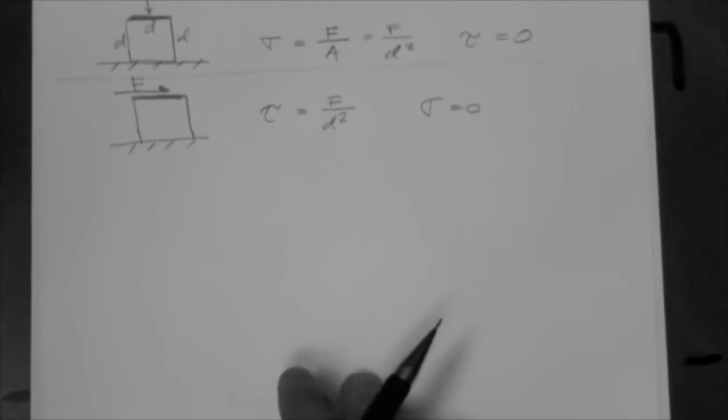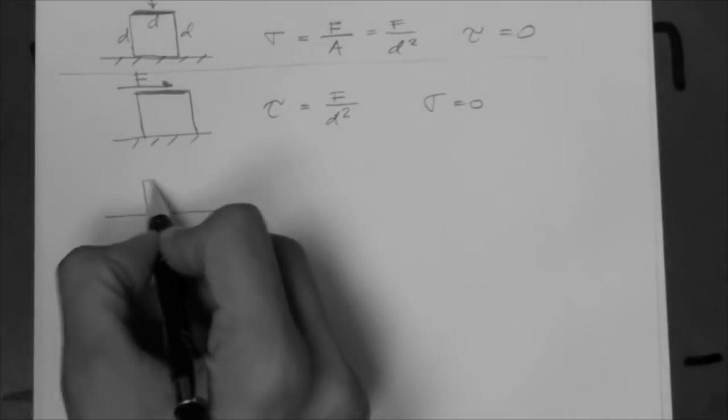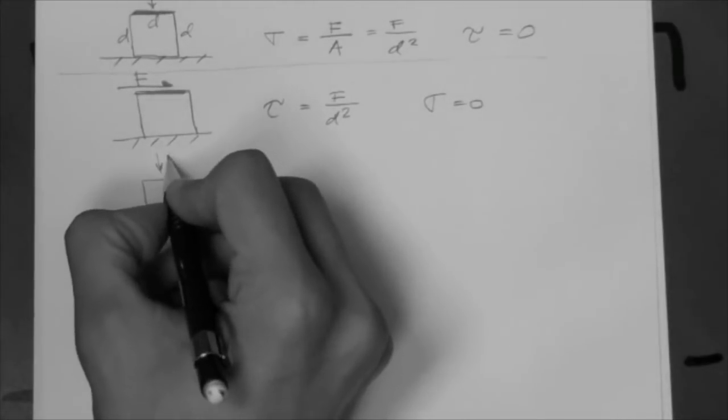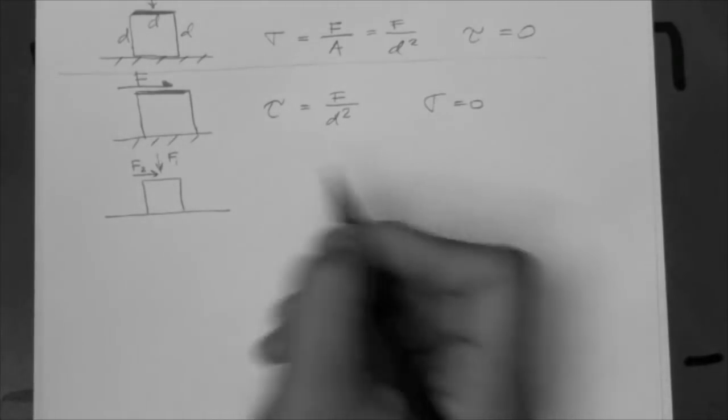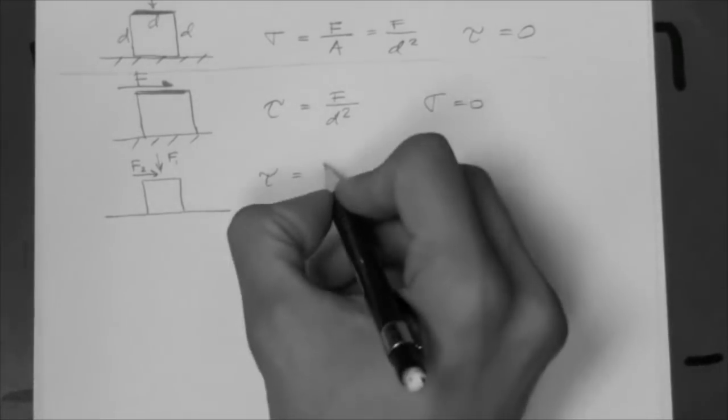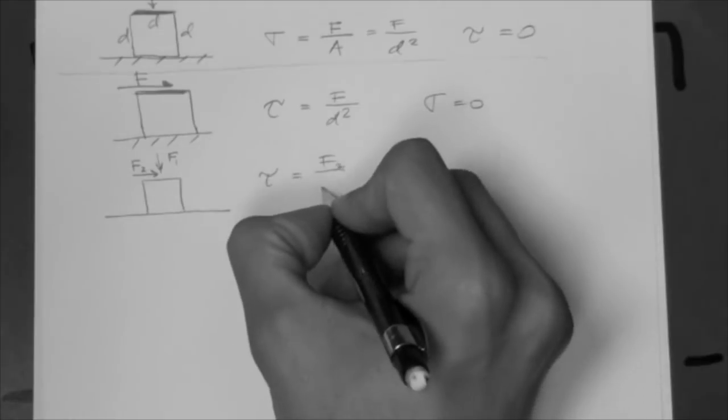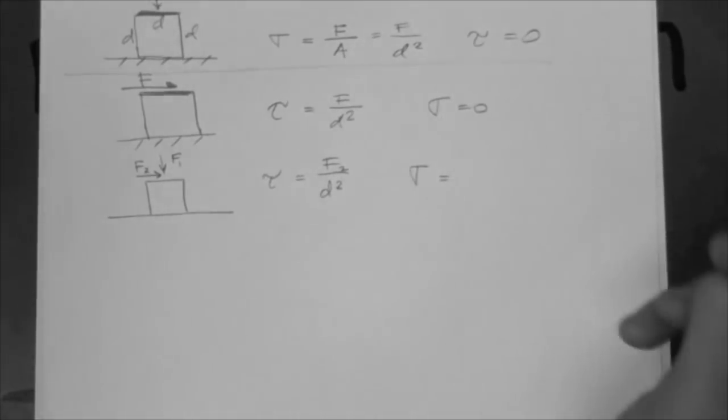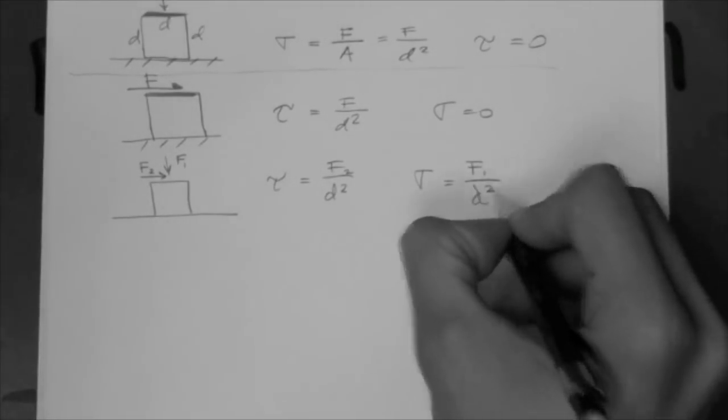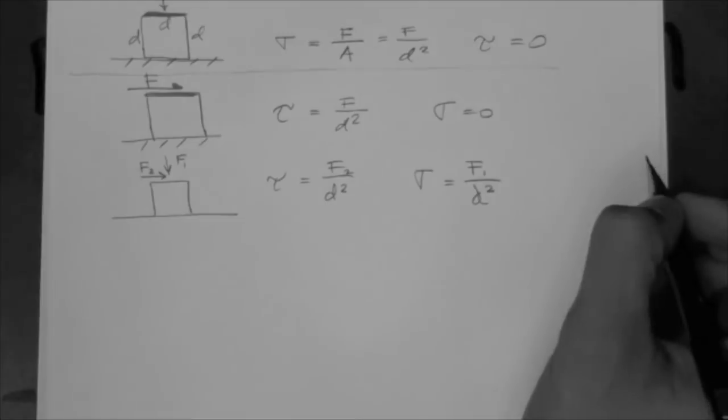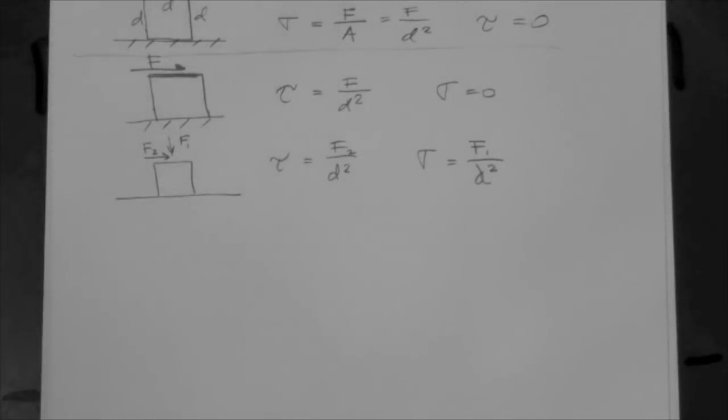Now, you may have a case where you have both. So, you have force one here, and another force, force two here, in which case, tau would be F2 over D squared, and sigma would be F1 over D squared. Okay, so those are just simple calculations of stress on planes, in this case, on top of cubes. Let's move on.